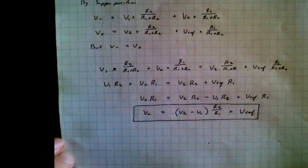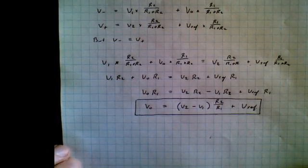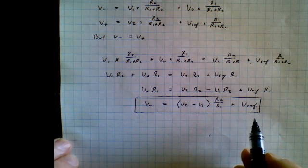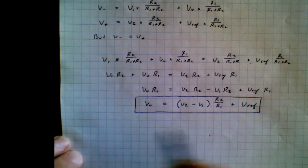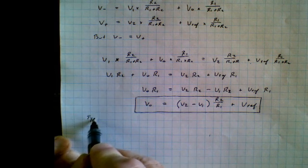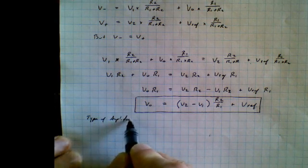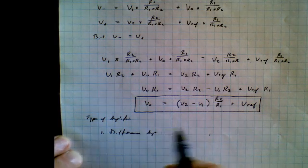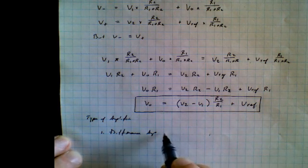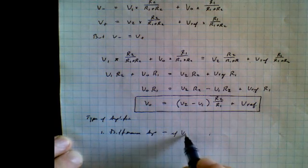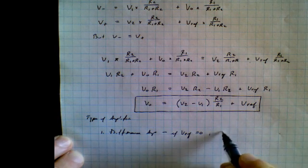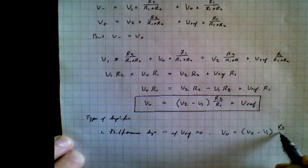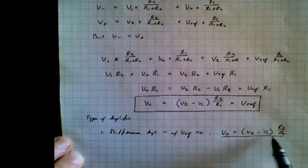Now, notice what we can get out of this. We can get several different kinds of amplifiers. Types of amplifiers. The first obvious type is a difference amplifier. And that we get if Vref is equal to 0. So notice what happens when we get V0 is equal to V2 minus V1 times R2 over R1. It amplifies the difference between these two voltages.